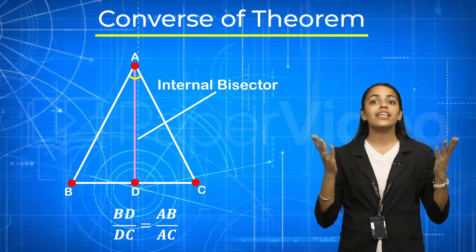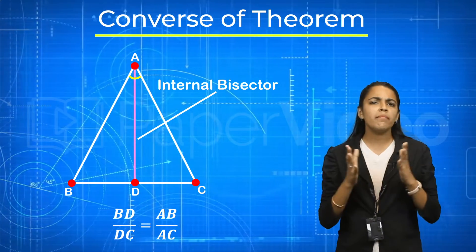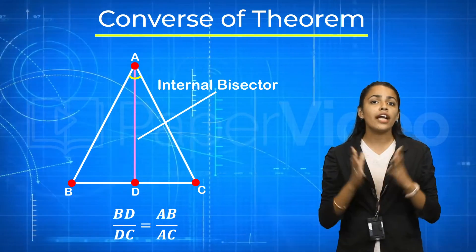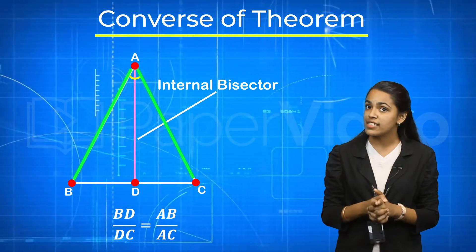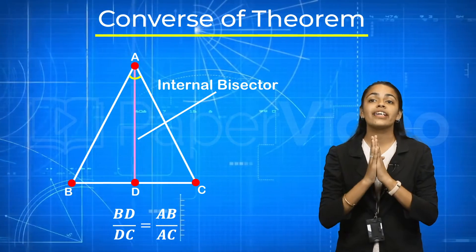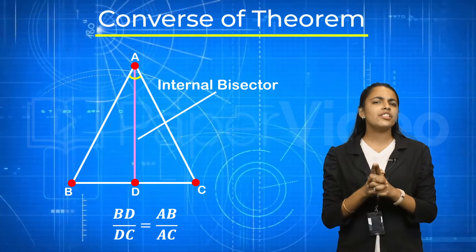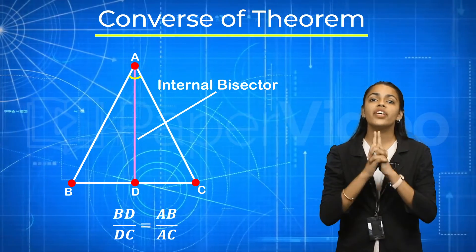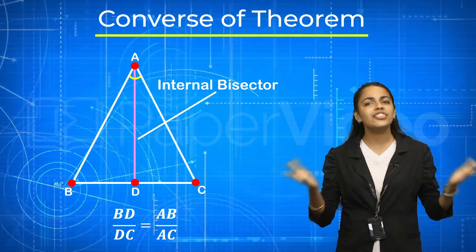That is, if AD bisects side BC in a ratio that is equal to the ratio of these two sides, then AD is the internal bisector of angle A of the triangle. This is known as the converse of the theorem of internal bisector of an angle of a triangle.